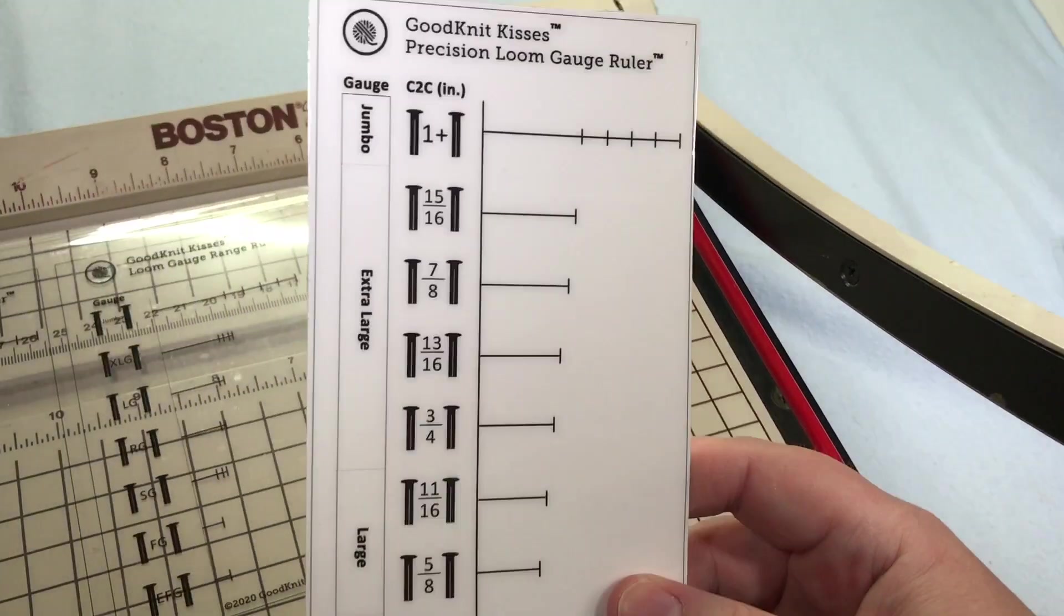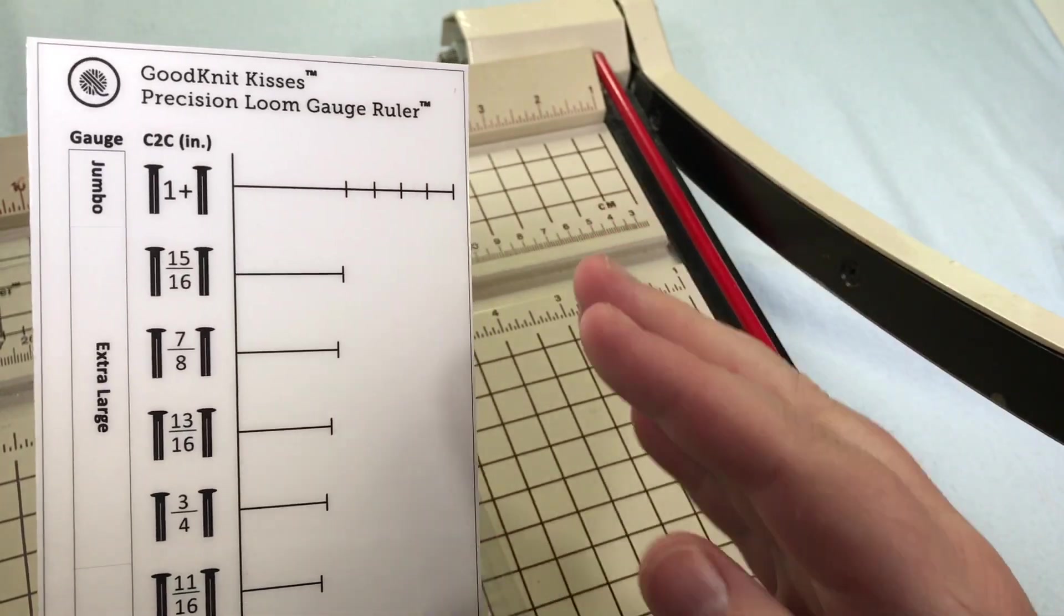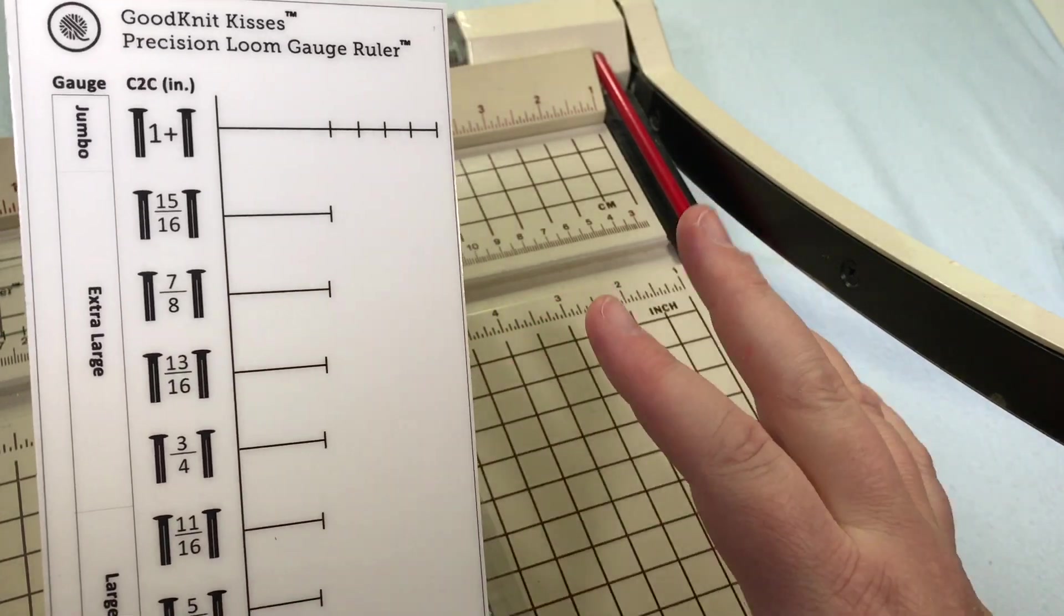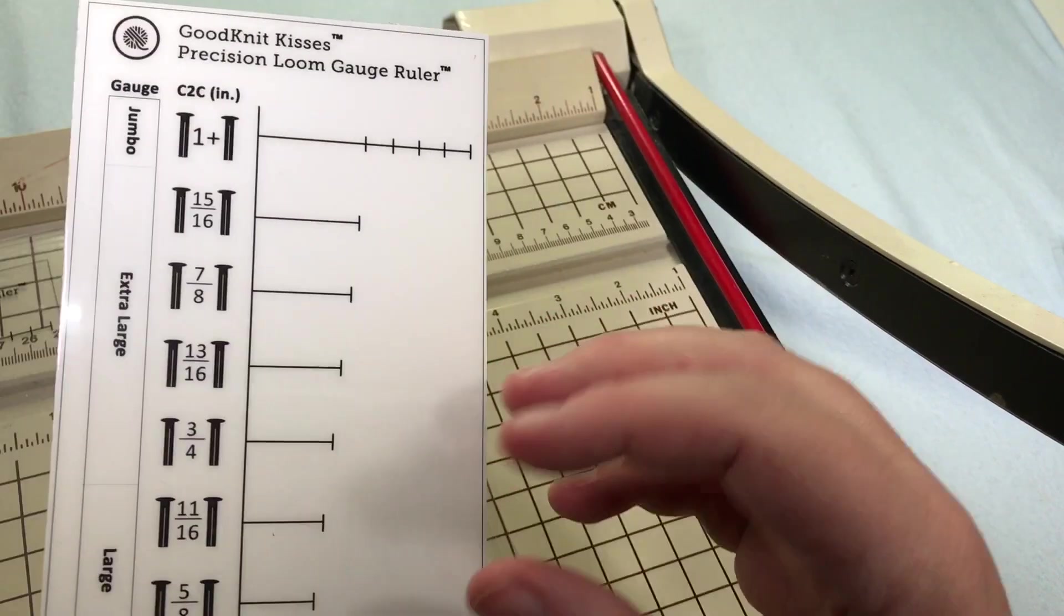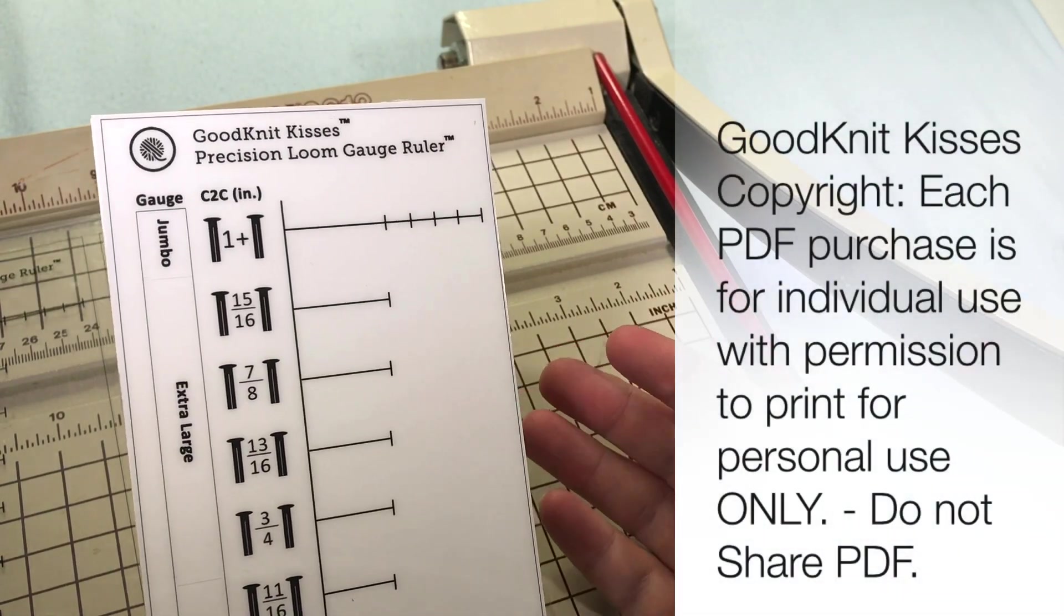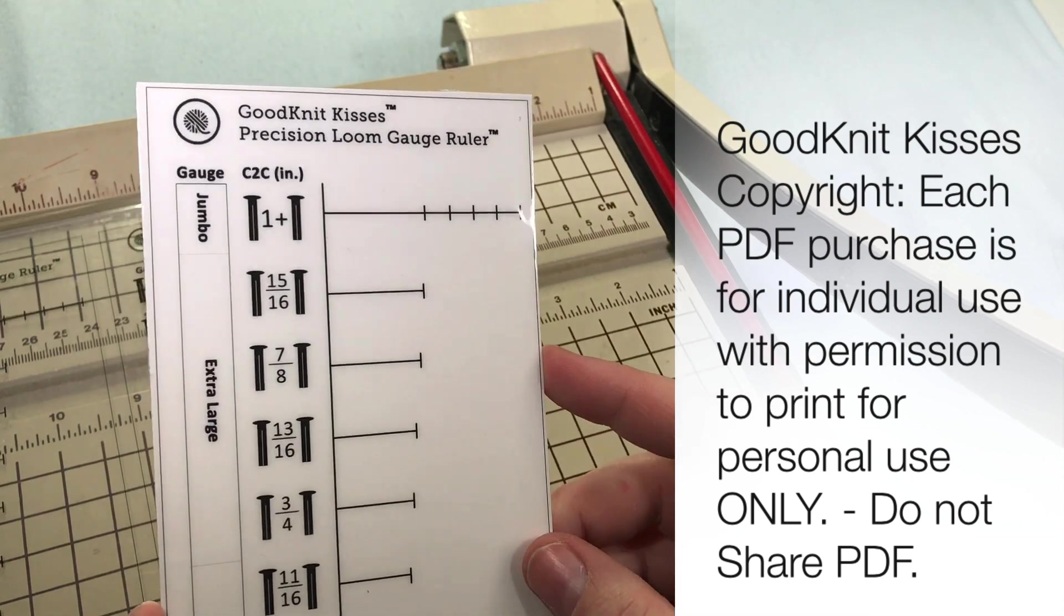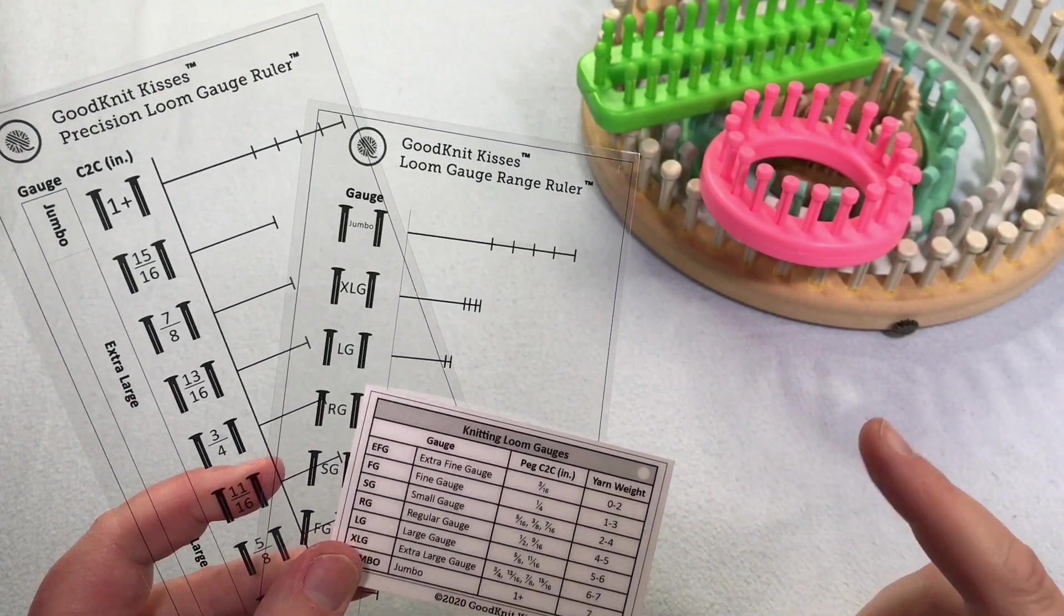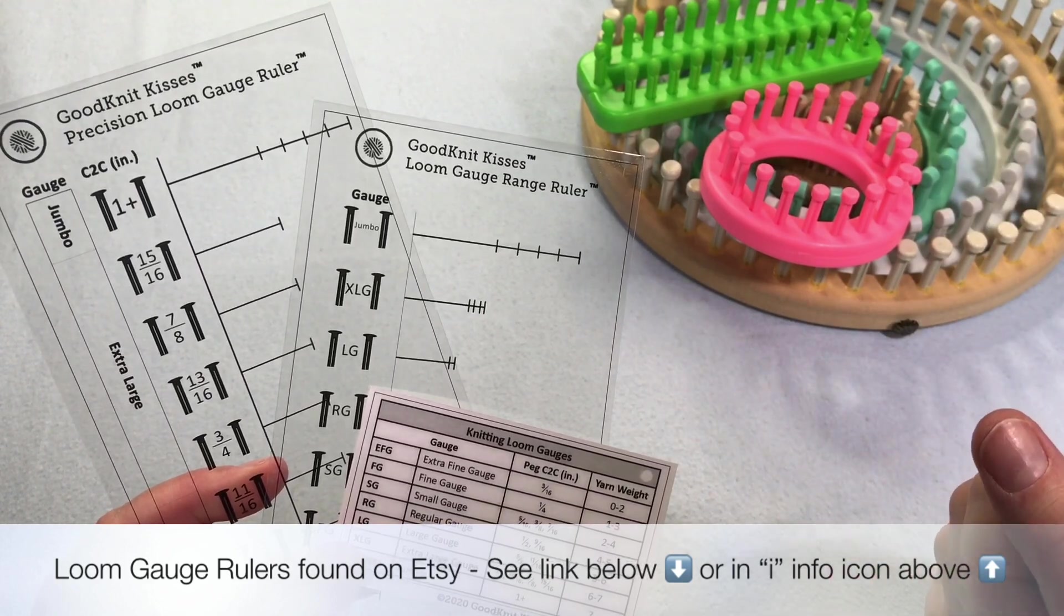Another tip is to print off an extra one of these on card stock, and you can cut out all of the fractions, and you can use it to organize and label your looms at home. If you wanna put them in bins sorted by the gauge, then that's completely up to you. It would be a fun way to use one of your extra prints. Please do not share the PDF with someone else. Copyright states that you are using it for your own personal use. So if you would purchase a PDF for yourself, I would gladly appreciate it, and you will enjoy it time and time again. The loom gauge ruler and chart is available on Etsy exclusively. Click on the little eye icon for more information, or down in the link below to get yours today.